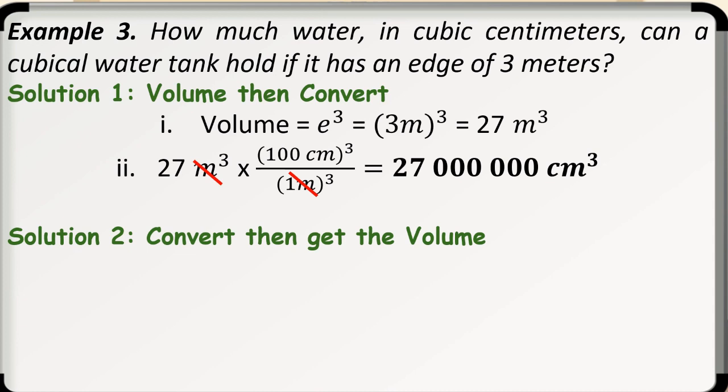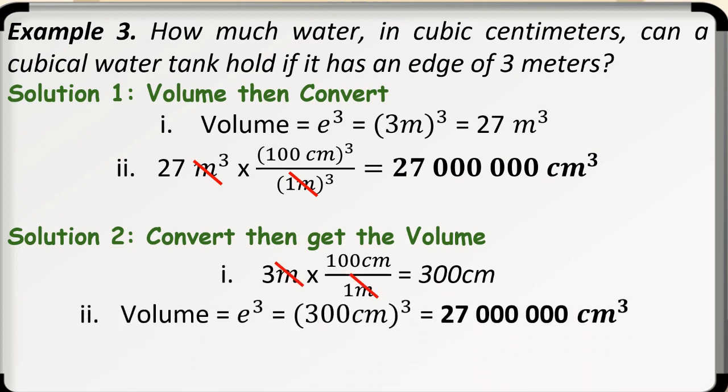Solution 2. We first convert 3 meters to centimeters that is 3 times 100 is equal to 300. Then get the volume using the formula for cube. So, we have 300 centimeters cubed that means 300 times 300 times 300 is equal to 27 million cubic centimeters. Therefore, the water needed to hold a cubical water tank in cubic centimeters is 27 million cubic centimeters.